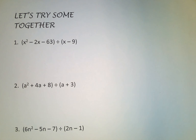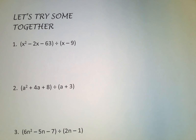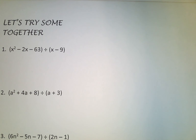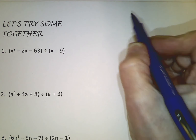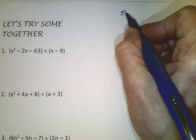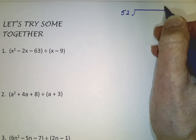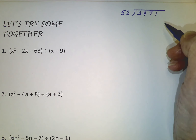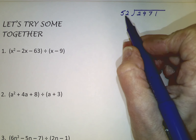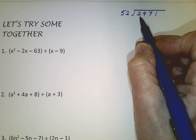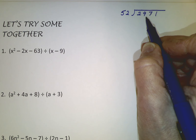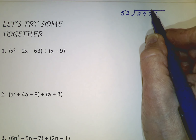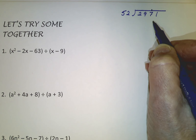I guess we can't put it off any longer — it's time to start dividing. I'll take you back in time to about fourth grade. Let's try 2971 divided by 52. We can't divide 52 into 2, we can't divide 52 into 29, but we can divide 52 into 297 — and that's where the first part of our answer is going to go, right over the 7.